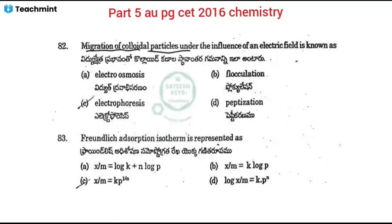Bit 82: Migration of colloidal particles under the influence of an electric field is known as what? In a colloidal system, when electric current is passed through the electric field, colloidal particles migrate. This migration of particles is the process we need to identify. The correct answer is option C — electrophoresis.